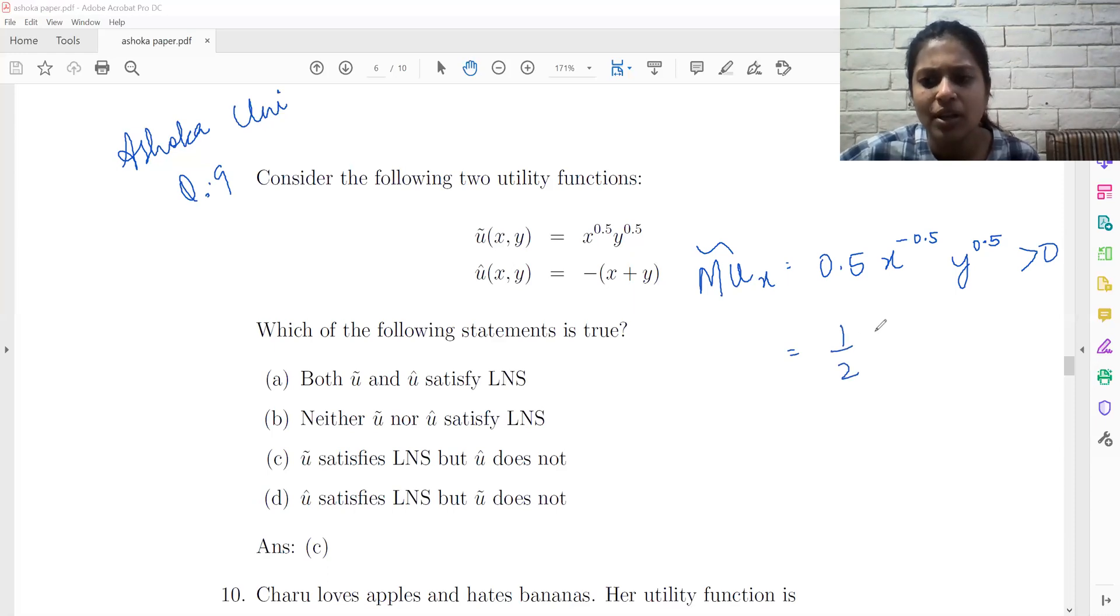This is positive marginal utility of good x, and good y is going to be positive. Now for u hat, the marginal utility for good x is going to be minus 1, and that is also going to be the marginal utility of y. So this is negative.